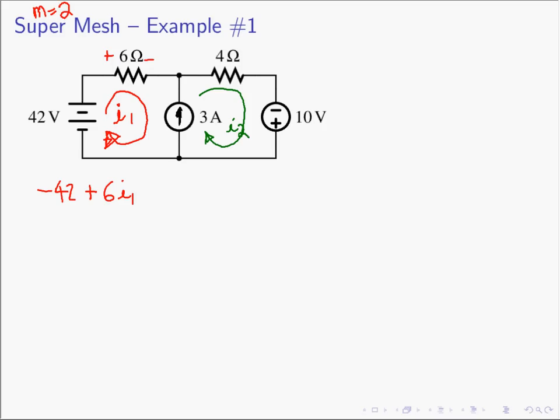This is a 3-ampere current source, and we're writing KVL, so we need the voltage across the current source. What is that voltage? We don't know. It's a current source — it will maintain 3 amperes no matter what the voltage across it is. The voltage will be whatever is required to make the rest of the circuit happy. There is no relationship between the 3 amperes and the voltage across the current source. Since we don't know what it is, we define a variable V? and keep going. So plus V? equals 0.